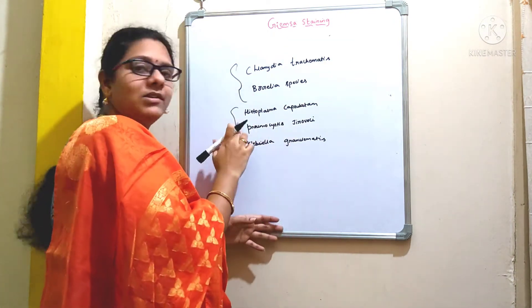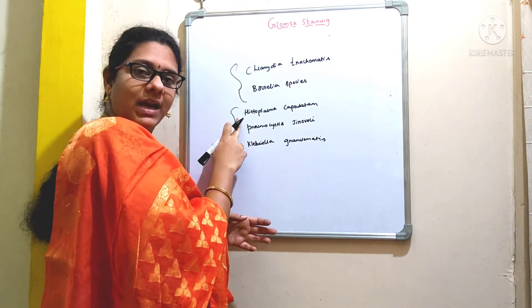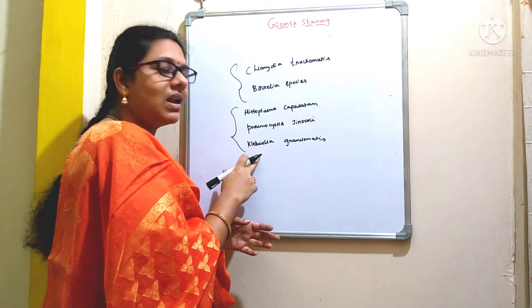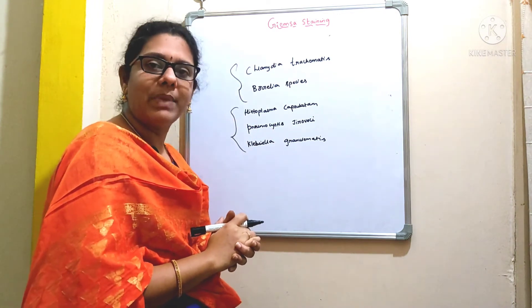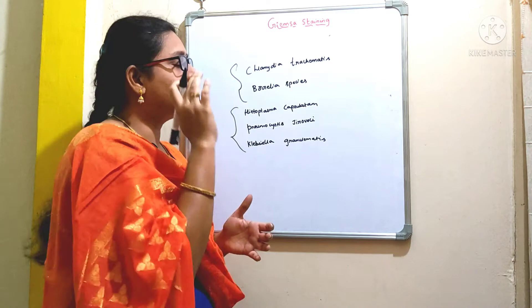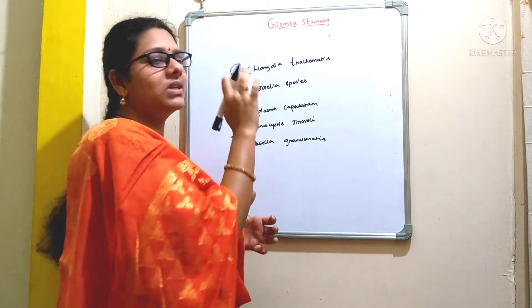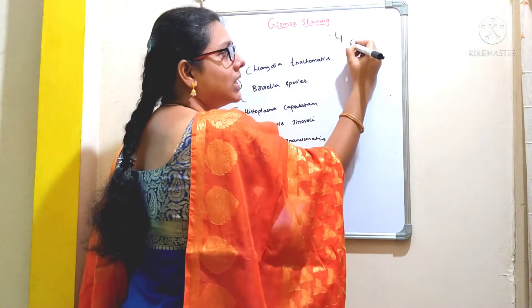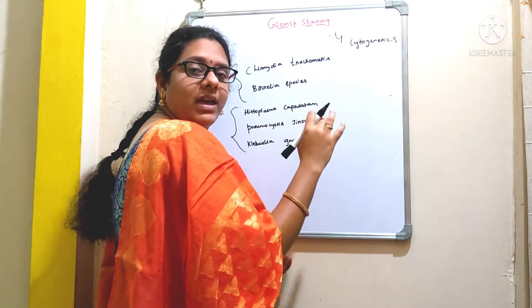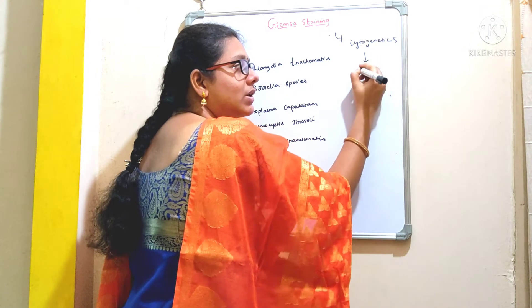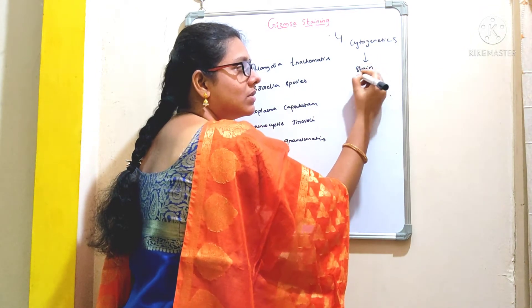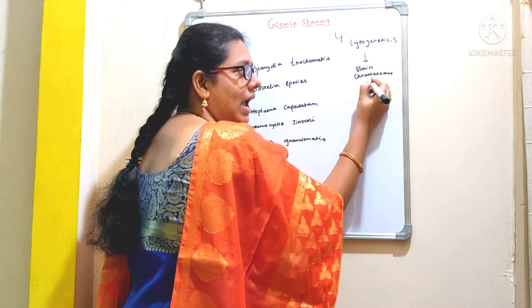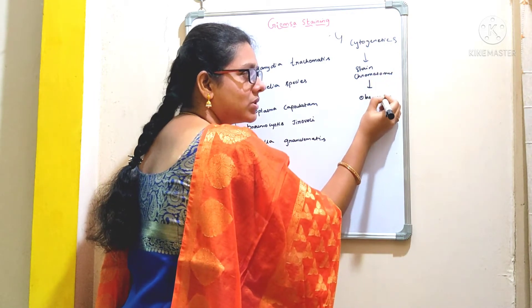This Giemsa staining method is also used to stain the species of Histoplasma capsulatum, Pneumocystis jirovecii, Klebsiella granulomatis, and occasionally some bacterial capsules. One of the important applications is in the field of cytogenetics, where it is possible to stain chromosomes and observe chromosomal aberrations.